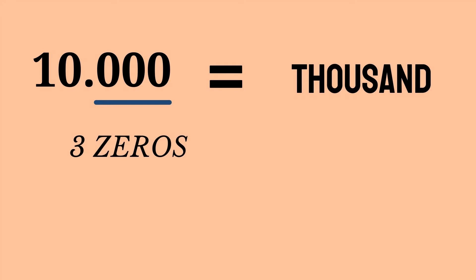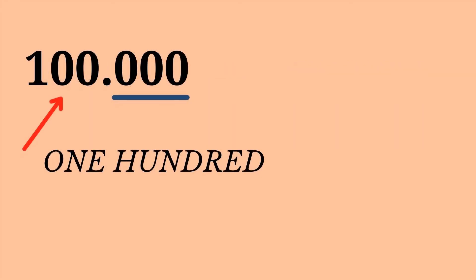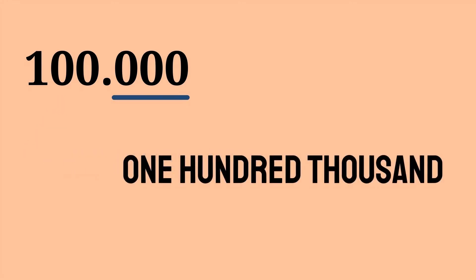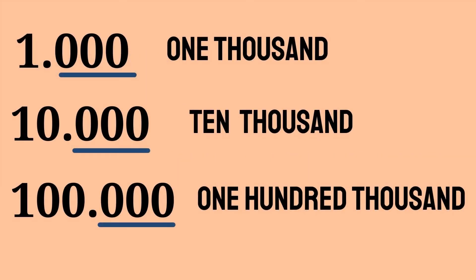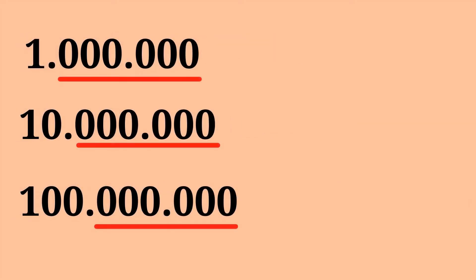This is thousand, and this is one hundred, so one hundred thousand. One thousand, ten thousand, and one hundred thousand. The three zeros here are highlighted in blue because that's thousand. But if you look here, these are red — they are not a thousand anymore.